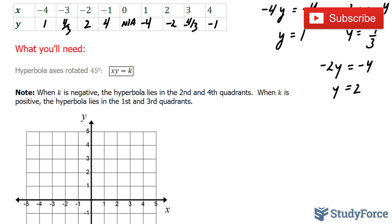My first point was at negative 4 and 1. Negative 4 and positive 1 is over here. Negative 3 and 4 over 3, which is equal to roughly 1.3, is right over here. My next point is negative 2 and 2. Negative 2 and 2 is over here. Negative 1 and 4 is up here.